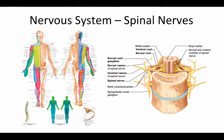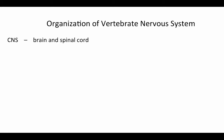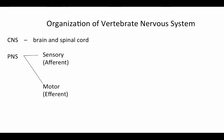Let's first take a look at the overall organization of the vertebrate nervous system. The vertebrate nervous system is divided into two components: the central nervous system or CNS, which consists of the brain and spinal cord, and the peripheral nervous system, which in turn can be broken into two divisions: a sensory or afferent component, and a motor or efferent component.